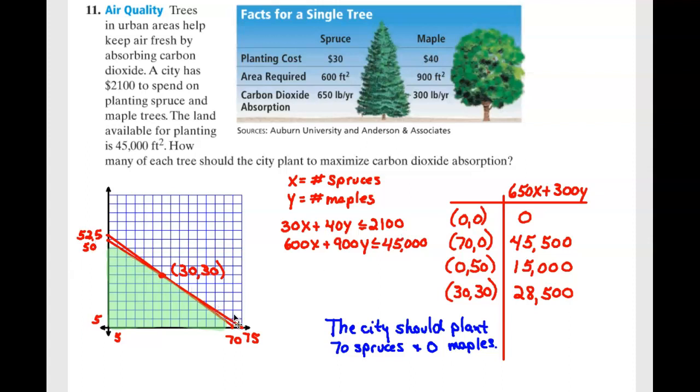So we're going to graph both of those red lines. We would technically have a domain constraint at zero, because again, we know that we can't graph negative numbers of trees. So the x and y axis also act as domains. That's why I didn't shade below them.